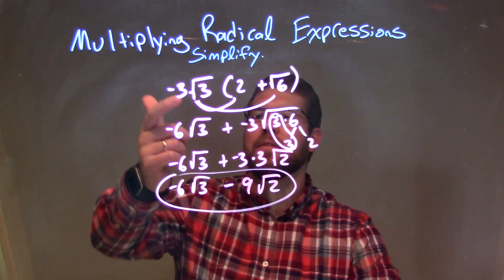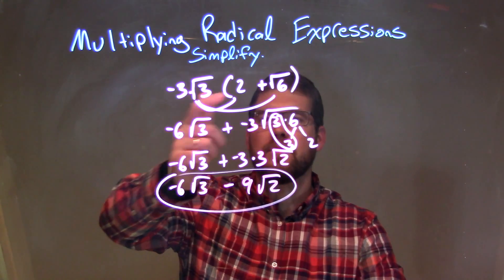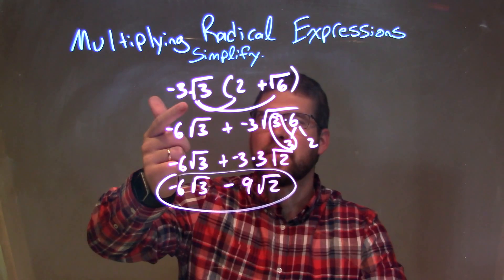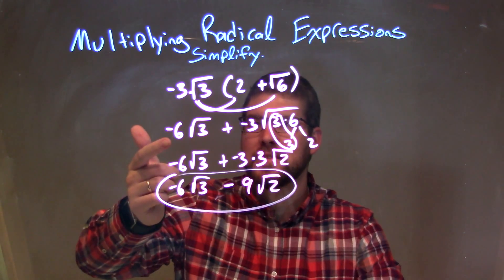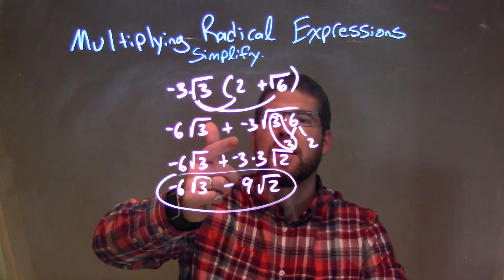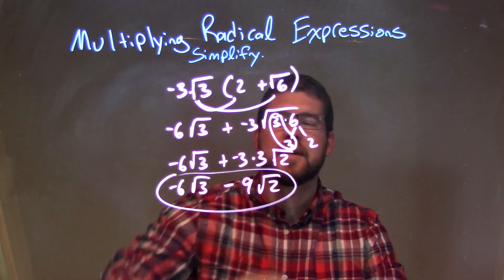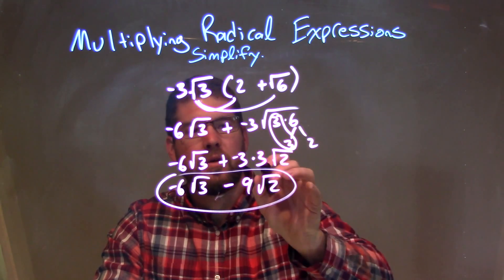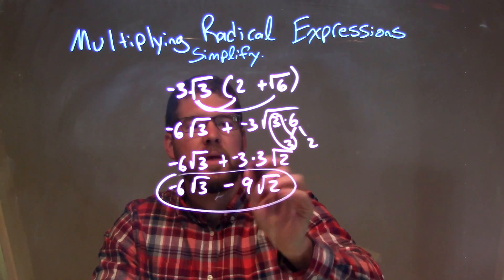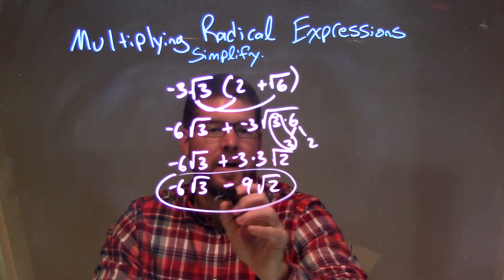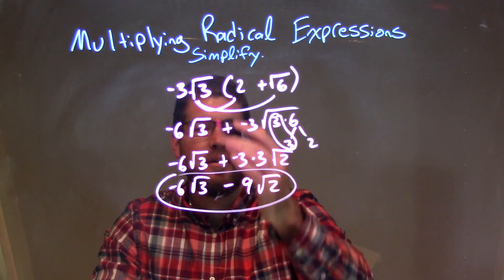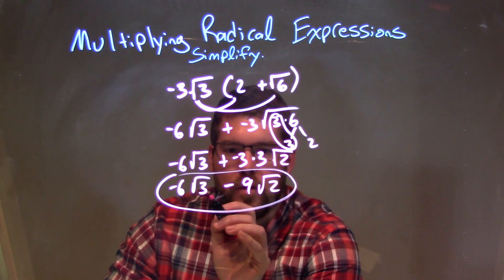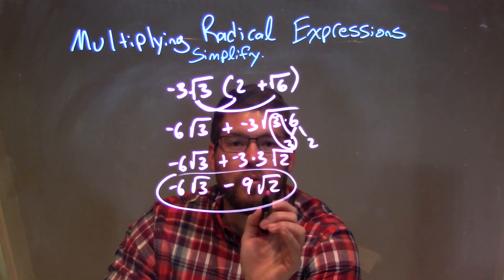Let's recap. We're given negative 3 times the square root of 3 times 2 plus the square root of 6. We distribute this negative 3 square root of 3 to both parts, giving us negative 6 square root of 3 plus negative 3 times the square root of 3 times 6. 6 broke down to be 3 times 2, the final pair of 3s is right there. Put the single on the outside. Negative 3 times 3 is just negative 9, so we have minus 9, and everything else is brought down. Our final answer is negative 6 times the square root of 3 minus 9 times the square root of 2.